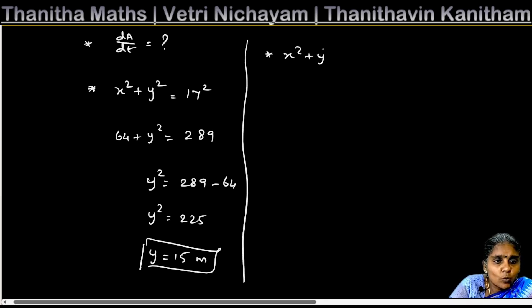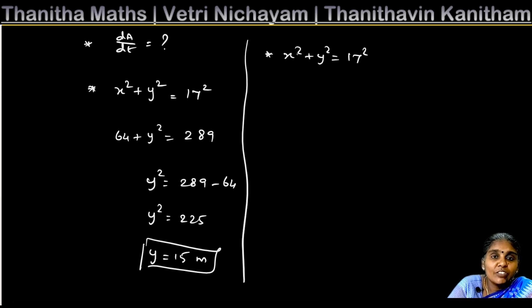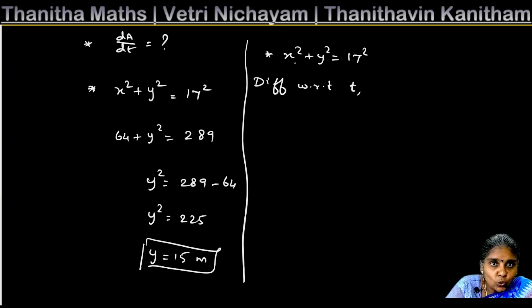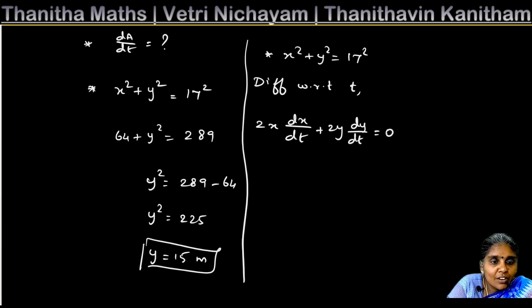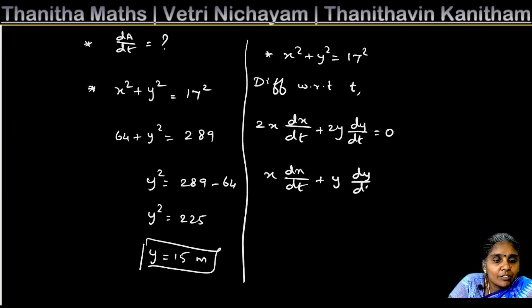We take x² + y² = 17² and differentiate with respect to time. Both x and y are dependent variables. Differentiating: 2x(dx/dt) + 2y(dy/dt) = 0. Simplifying: x(dx/dt) + y(dy/dt) = 0.